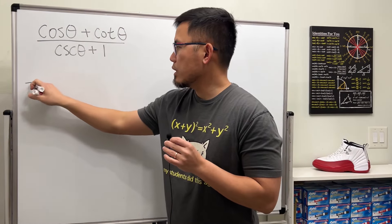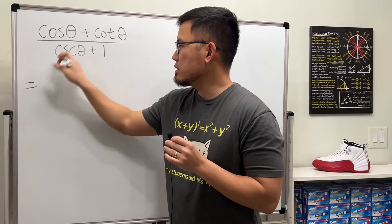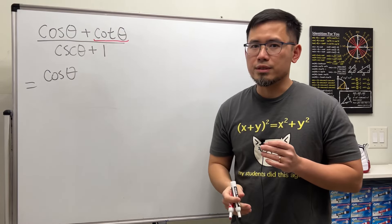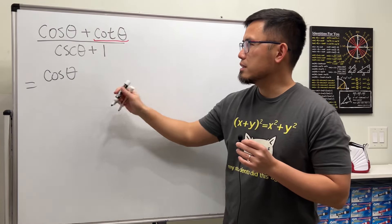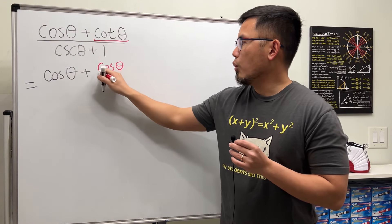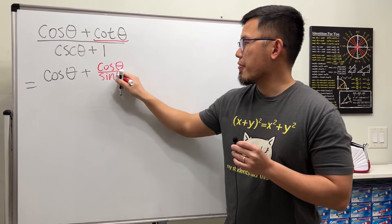This right here has cosine already, so just keep that. But for cotangent theta, how can we change that into sine and cosine only? The answer is cotangent theta equals cosine theta over sine theta.